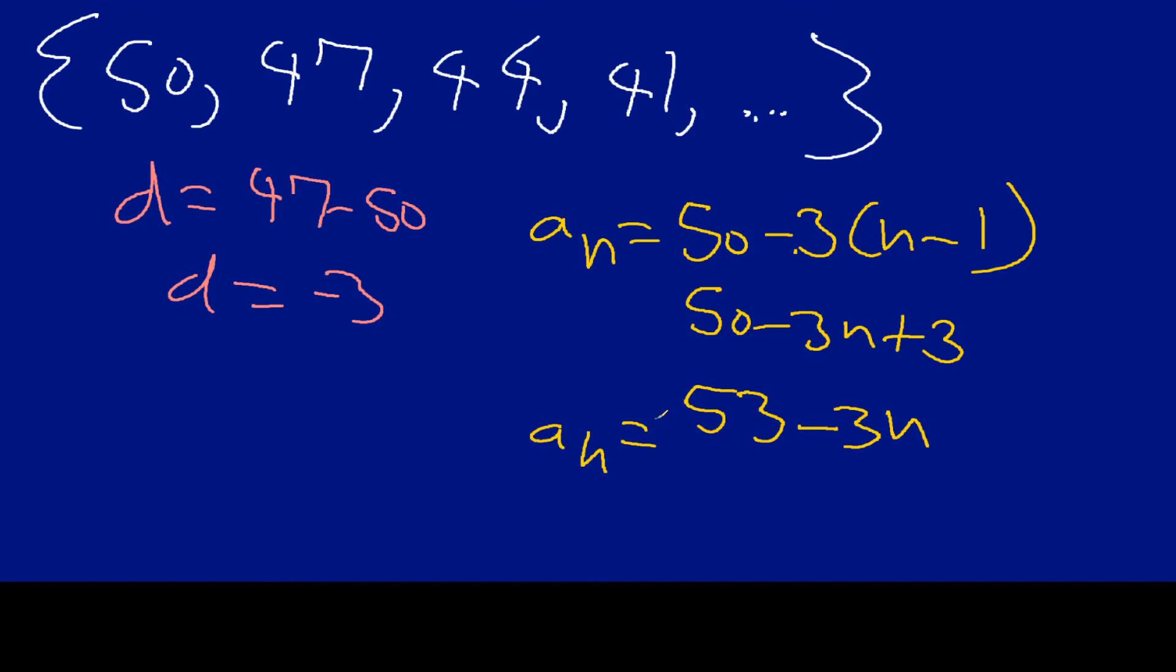So, if we were to test that, if I put in the number 1. So, I'm sorry, the first term, the first term. So, minus 3 times 1 is going to be minus 3. 53 minus 3 is going to be, you can see right here, 50.